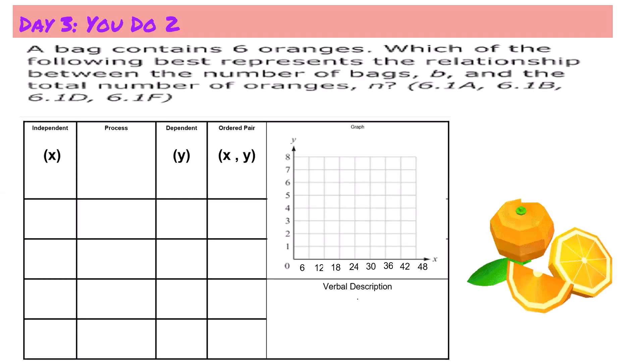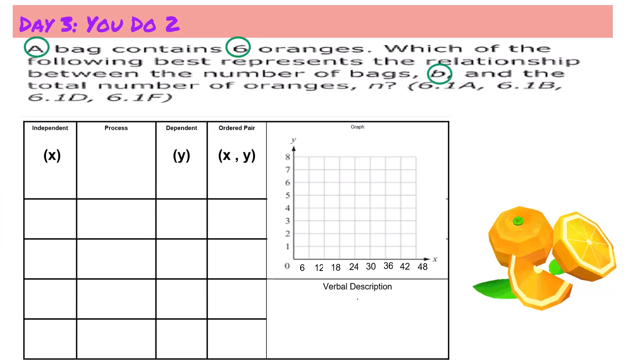A bag contains six oranges. Which of the following best represents the relationship between the number of bags b and the total number of oranges? Let's start off by annotating. I will start off by circling the letter a, the number six, the letter b, and the letter n. Let's read the first sentence over again. A bag contains six oranges. When someone says a bag or if someone gives me a bag, I assume that they're only giving me one bag, so I'm going to determine that one bag contains six oranges.